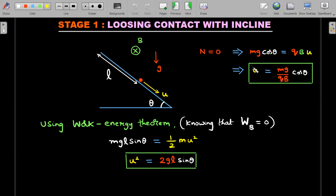In the normal direction, the value of mg cos theta should be balanced by the magnetic force which is qBu, where u is the speed at which it loses contact. I've written down the value of that u in terms of these parameters. I boxed it because I'll be using this in stage two.